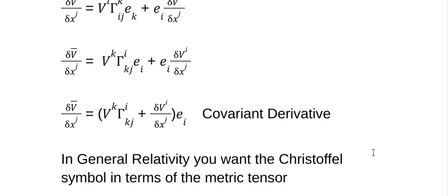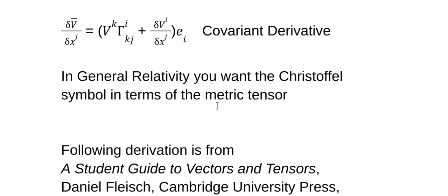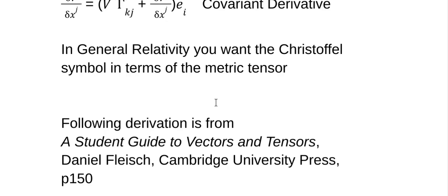In general relativity, you want the Christoffel symbols in terms of the metric tensor. One of the reasons you want to do that is because it eliminates all of these basis vectors — they all go away because they become dot products. I could not do that derivation myself. As a side note, I was watching a relativity video where they claimed that Einstein himself couldn't do it, and he went to a math professor to get the Christoffel symbol in terms of the metric tensor. So if he couldn't do it, I don't feel too bad.